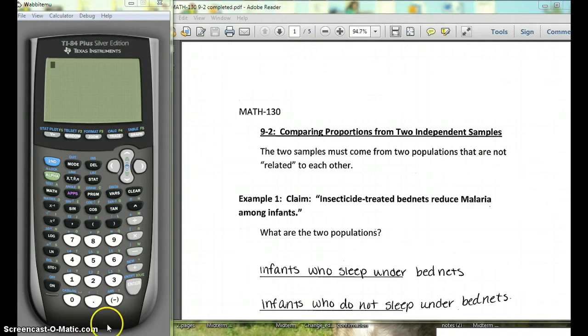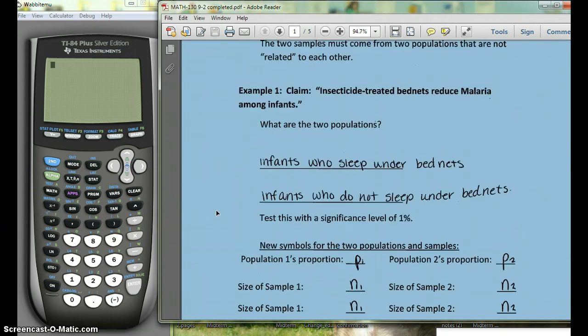Hi, in this video we're going to talk about how to use our calculator to find the p-value when we're doing a hypothesis test with two proportions, with two samples. So we're going to go through this, this goes with 9-2 in our notes. We're going to go through this example.